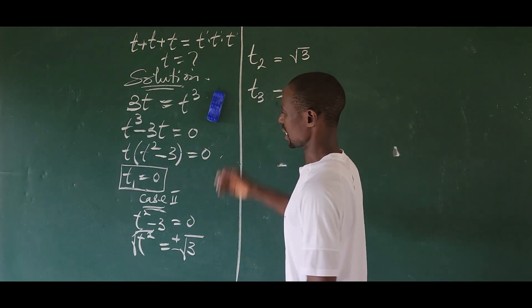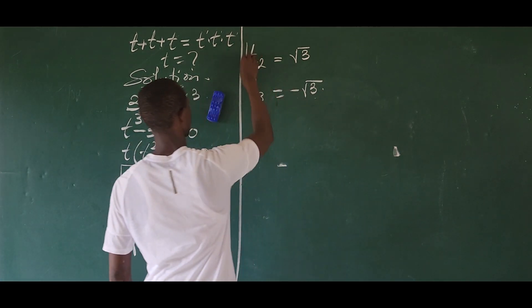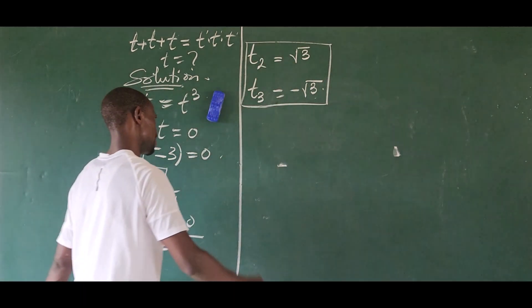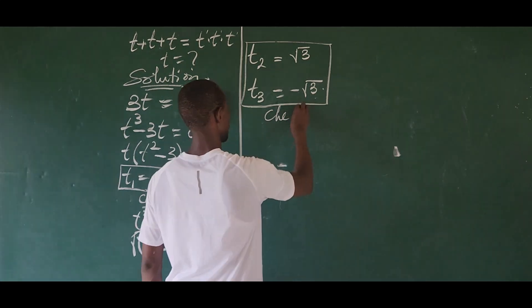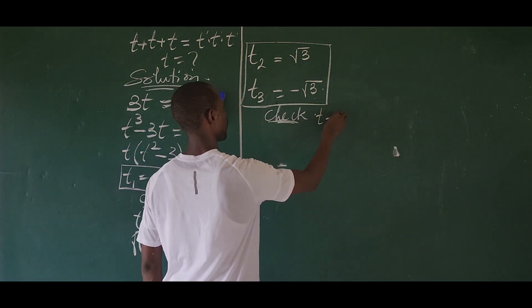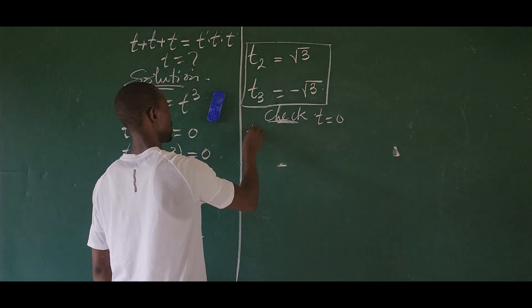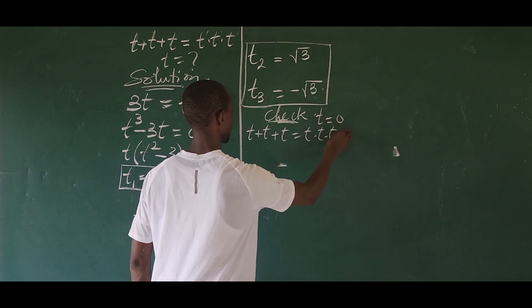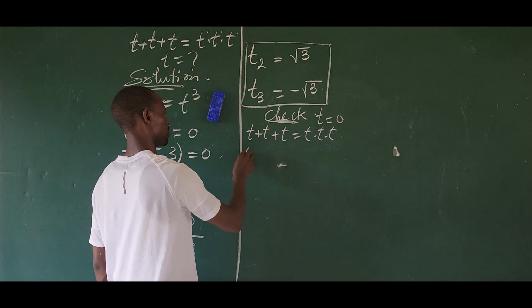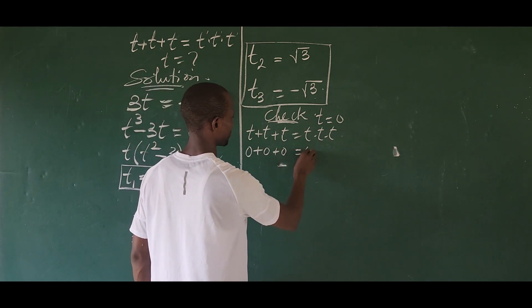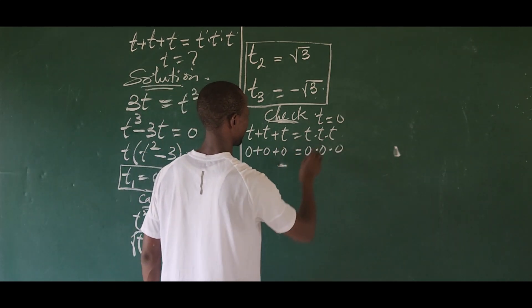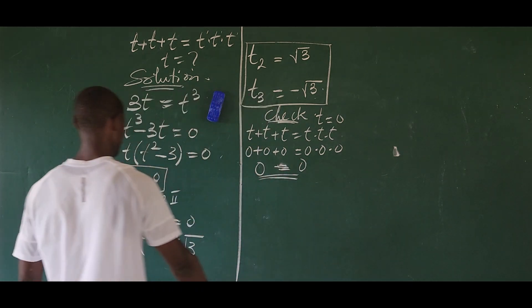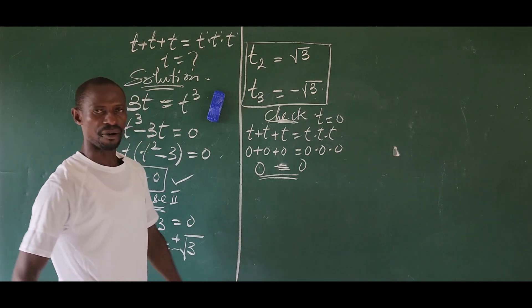Now let's confirm all three roots satisfy the original equation. Checking t₁: when t equals zero, zero plus zero plus zero equals zero times zero times zero, giving us zero equals zero. This confirms t equals zero satisfies the equation.